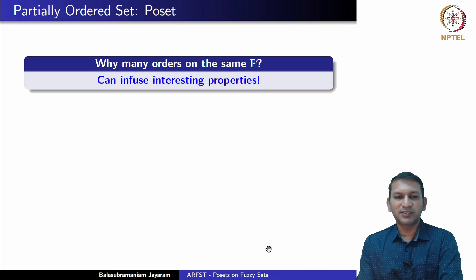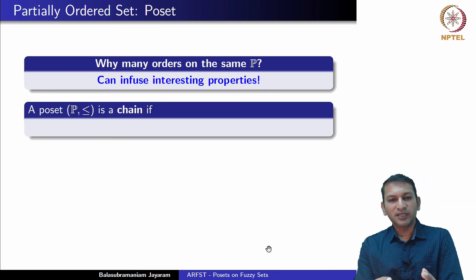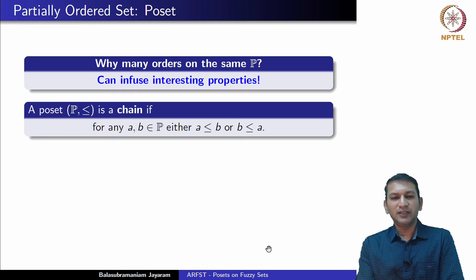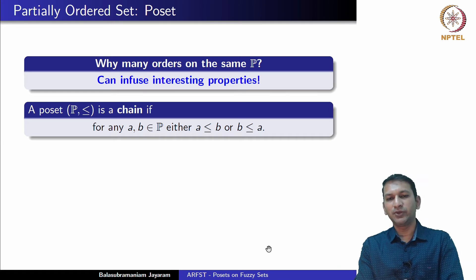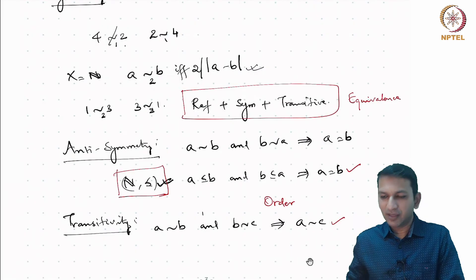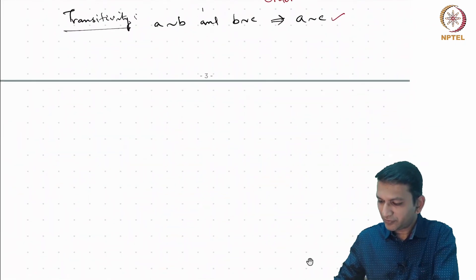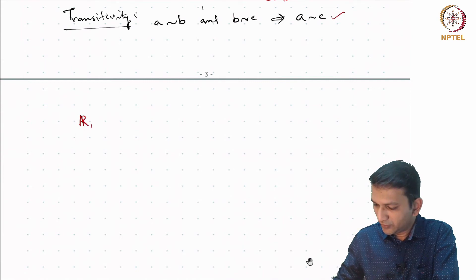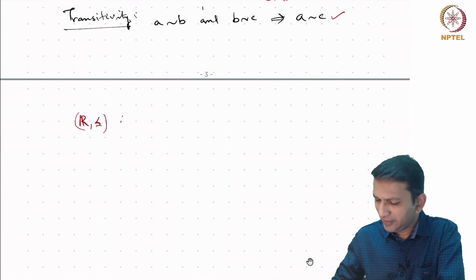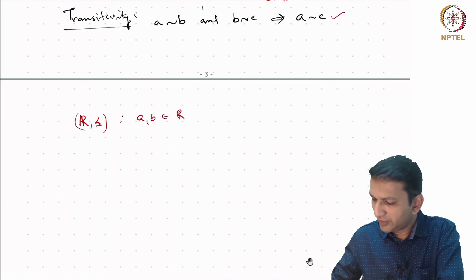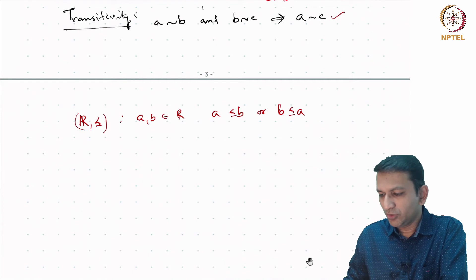A poset is called a chain or totally ordered set if, for any two elements a and b, they are related — meaning either a ≤ b or b ≤ a. Common examples of chains: if you take R with the usual ordering, given any a, b in R, either a ≤ b or b ≤ a. A similar total ordering exists on N as well.